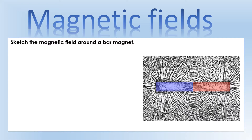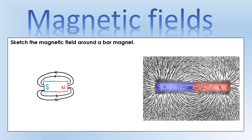If we use iron filings with a bar magnet we can see something that looks like this diagram over here on the right hand side. What I'm going to show you is how we'd actually sketch a diagram to show this, because we're not going to draw all of those lines. So we've got our magnet, we've got our north and south poles, and we will start drawing field lines. The field lines go from north all the way to the south pole.